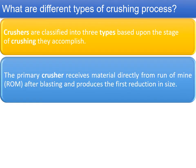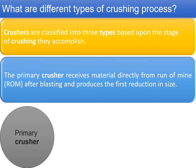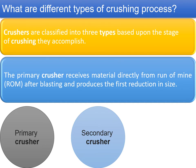Crushers are classified into three types based upon the stage of crushing they accomplish. Primary crushers receive material directly from run-of-mine after blasting and produce the first reduction in size. Then there are secondary crushers and tertiary crushers — these three stages of crushing are generally used to produce the aggregates.